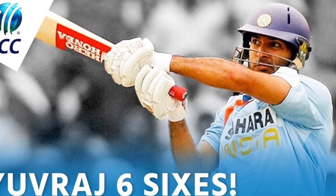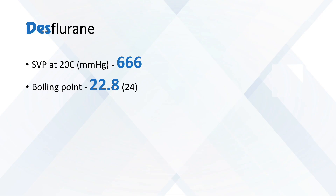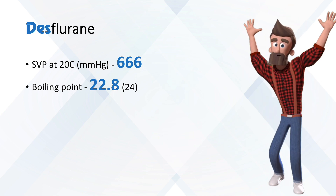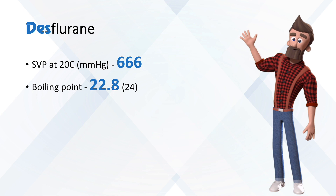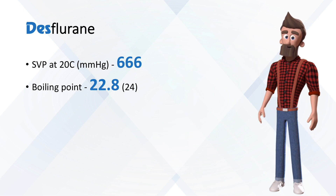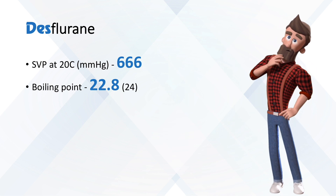Moving ahead — the saturated vapor pressure at 20 degrees Celsius in millimeters of mercury for desflurane is 666. That's triple six — six hundred and sixty-six.